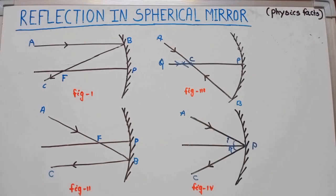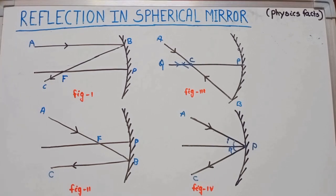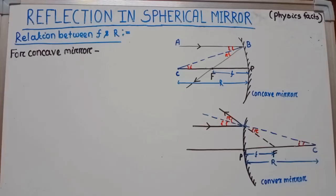Students, remember this core figure, which will be used in our next topic where we determine the mirror formula for spherical mirrors. Now here we derive the relation between focal length and radius of curvature.